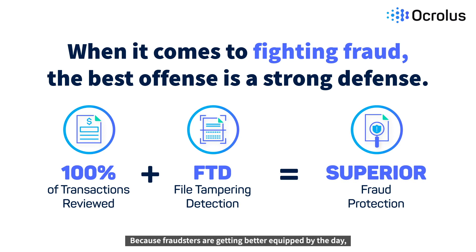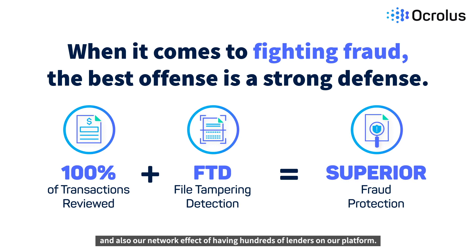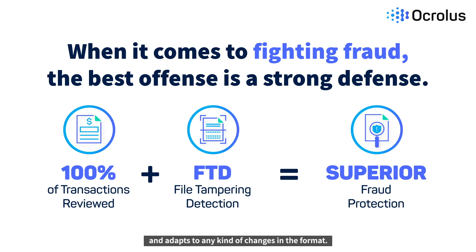Because fraudsters are getting better equipped by the day, our technology is constantly being optimized through machine learning and also our network effect of having hundreds of lenders on our platform. This network enables us to see more transactional data and adapt to any kind of changes in the format.